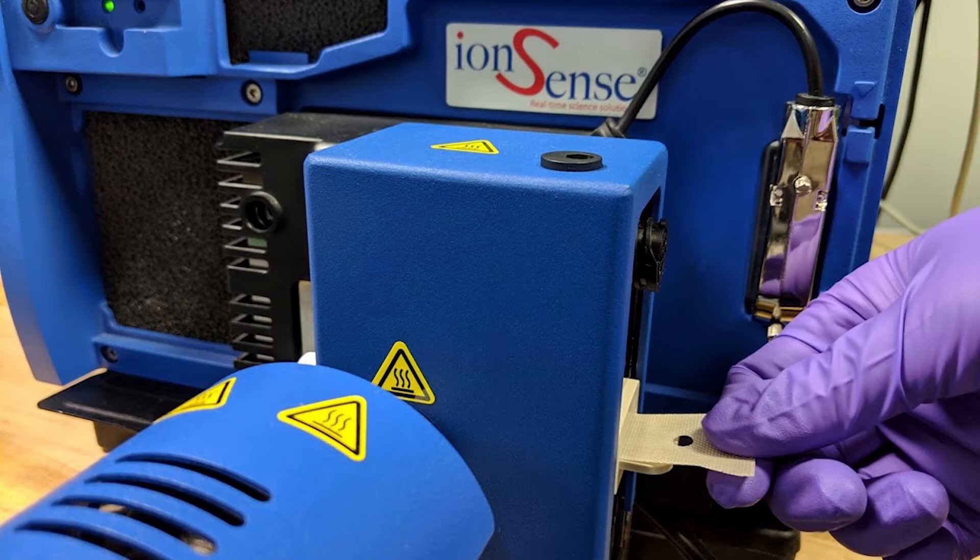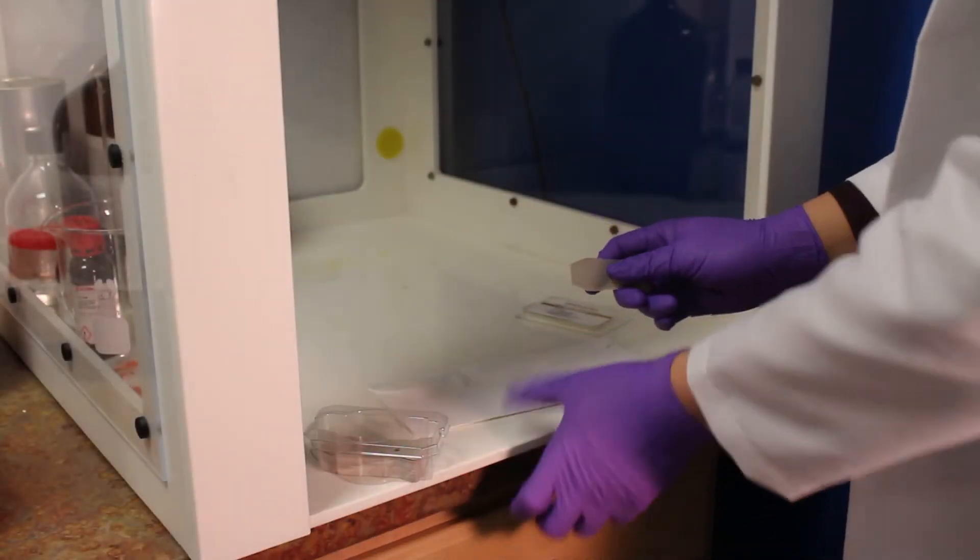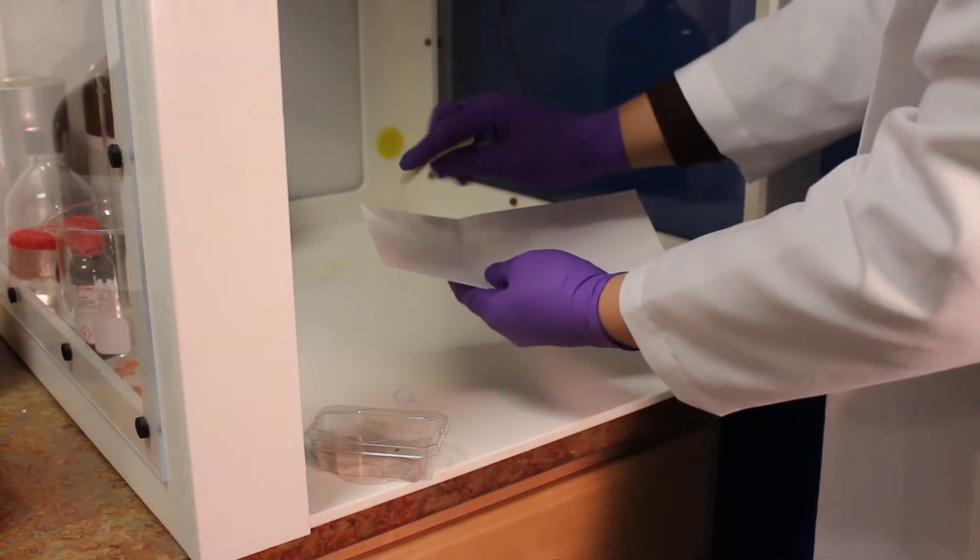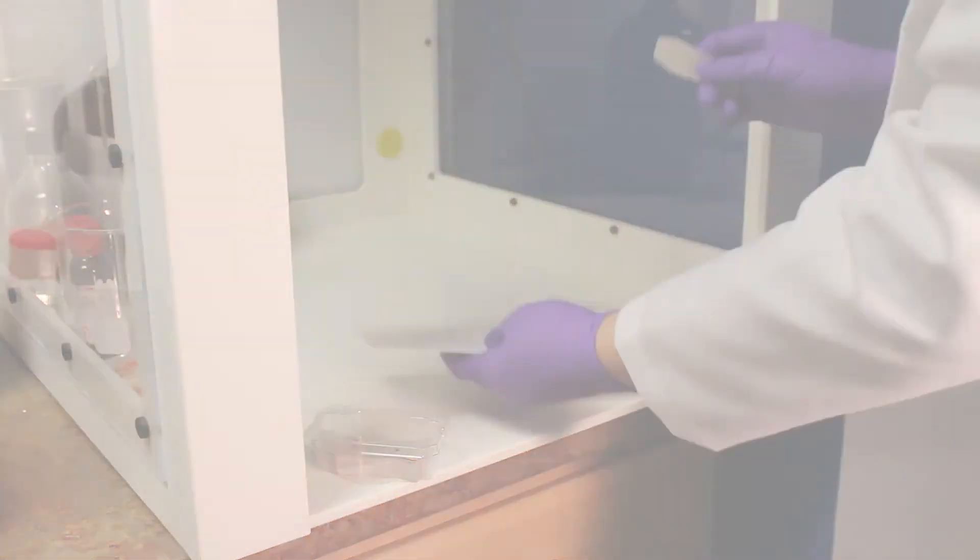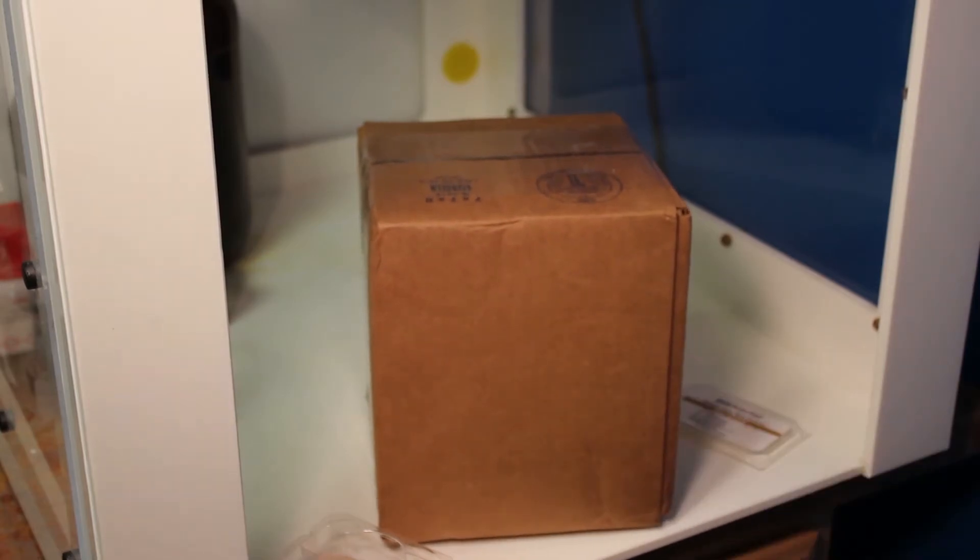To detect and identify drugs of abuse, simply take a swab and swipe the suspected material such as a packaging envelope or box to collect trace drug particles that were deposited during handling.